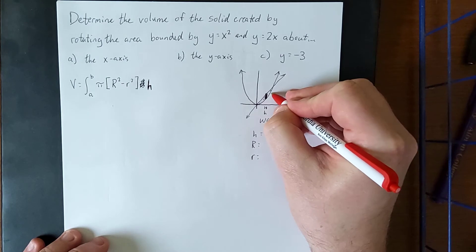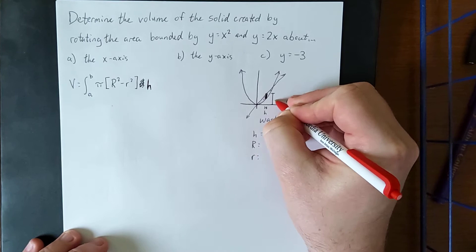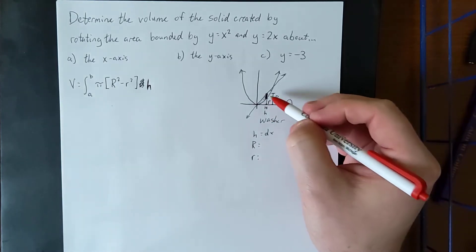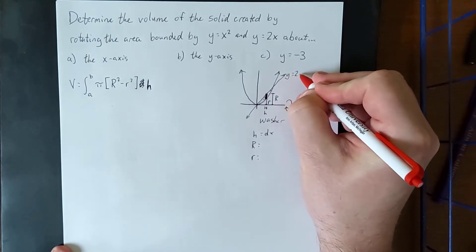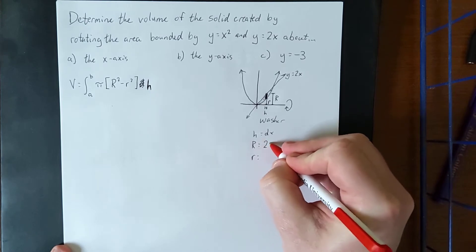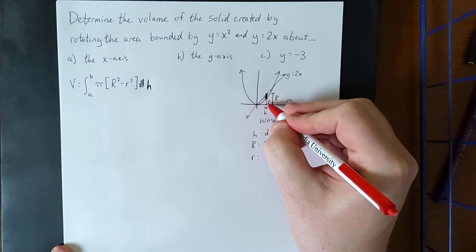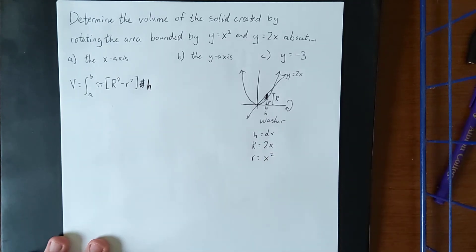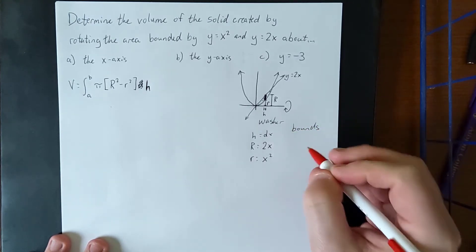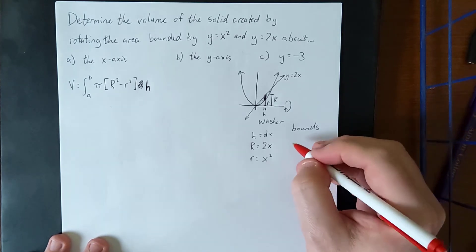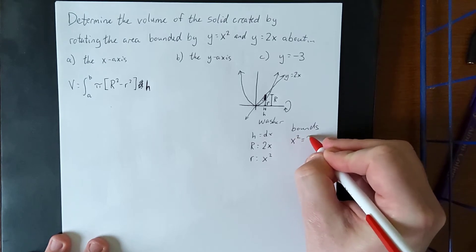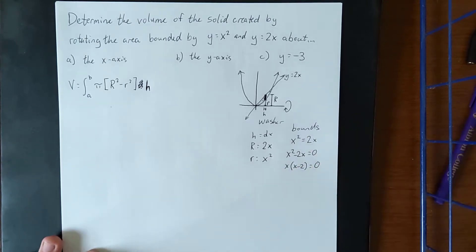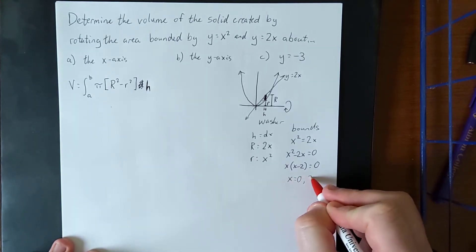The outer radius R is the distance from the axis of rotation to the top of the rectangle, and the inner radius r is the distance to the bottom. The outer radius is defined by the line y equals 2x, so big R equals 2x. The inner radius is the distance from the x-axis up to the parabola, so little r equals x squared. For the bounds, setting the functions equal: x squared equals 2x gives x squared minus 2x equals 0, factoring to x(x minus 2) equals 0, so x equals 0 and x equals 2.